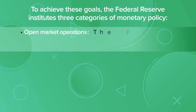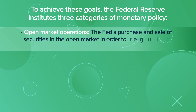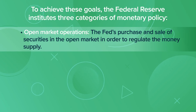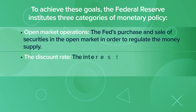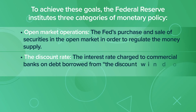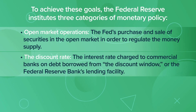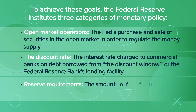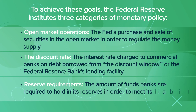Open market operations: the Fed's purchase and sale of securities in the open market in order to regulate the money supply. The discount rate: the interest rate charged to commercial banks on debt borrowed from the discount window, or the Federal Reserve Bank's lending facility. And reserve requirements: the amount of funds banks are required to hold in its reserves in order to meet its liabilities.